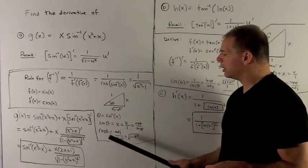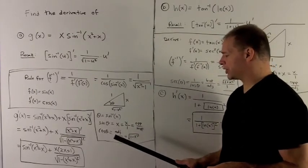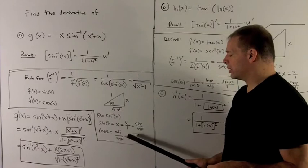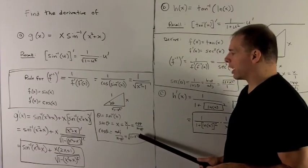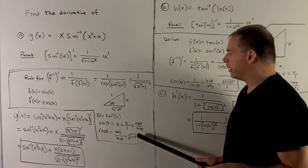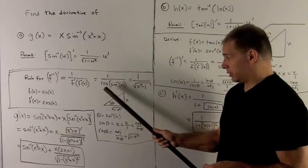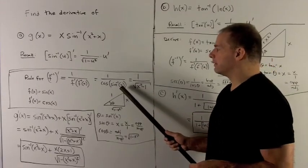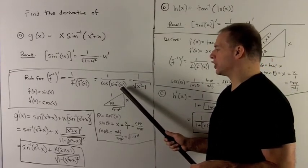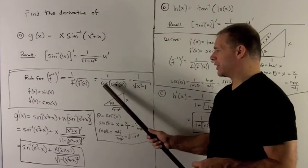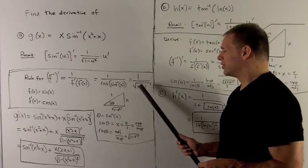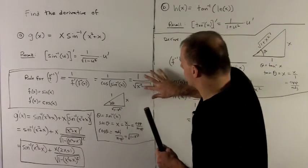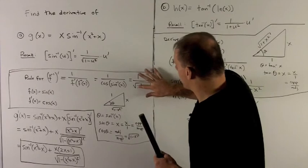So now the cosine is just given by adjacent over hypotenuse, so that's radical 1 minus x squared. Going back to the quotient for the derivative of the inverse function, we want the cosine, so that's just 1 over radical 1 minus x squared, as promised.